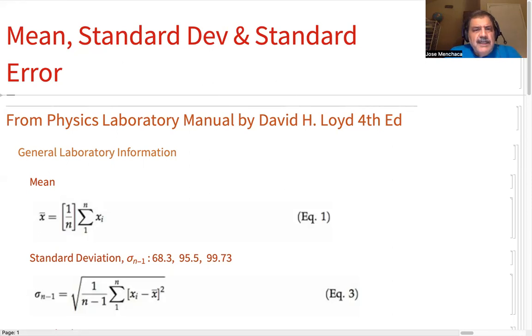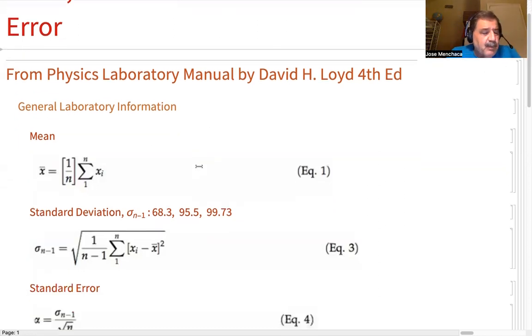So I'm going to discuss mean, standard deviation, and standard error as it's taught by David Lloyd in Physics Laboratory Manual, fourth edition. Let me get it there on the screen. That's what I'm using as a text. So from the general laboratory information, it's not even Laboratory One, it's just the general laboratory information that he gives at the beginning. And he gives us equations for getting the mean, x bar...